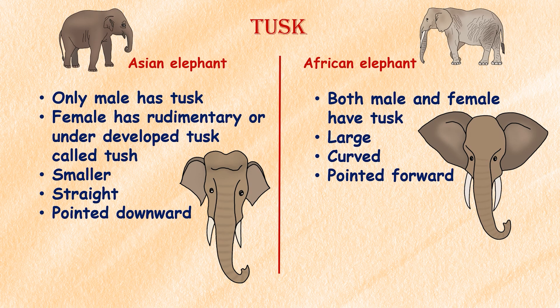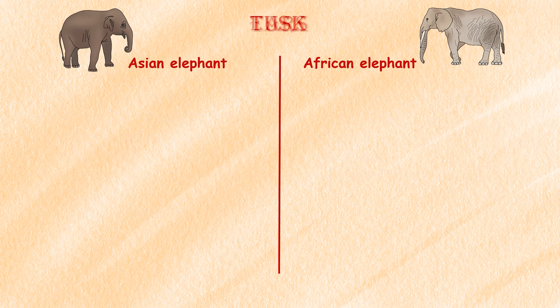Tusks: All African elephants, both male and female, have tusks, whereas in Asian elephants only males have tusks, and females have rudimentary or underdeveloped tusks called tushes. The tusks of African elephants are larger, curved, and point forward, while the tusks of Asian elephants are smaller, straighter, and point downward.